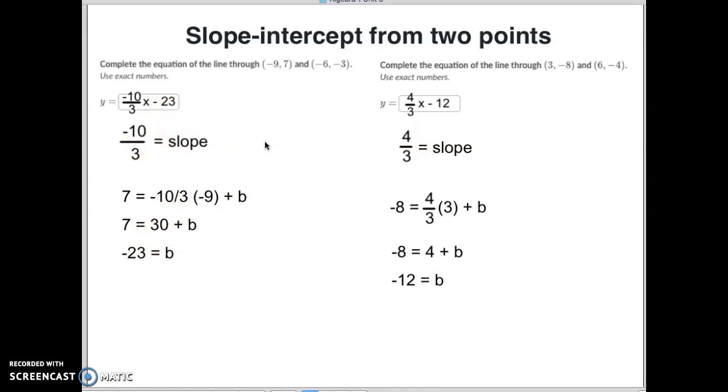So the equation is simply y equals negative 10 over 3x minus 23. Probably best idea to have me check each of these before you hit enter. I don't want to see you getting frustrated. Let's do one more.